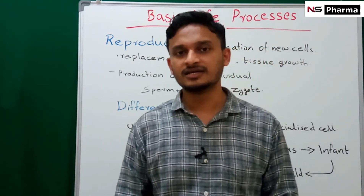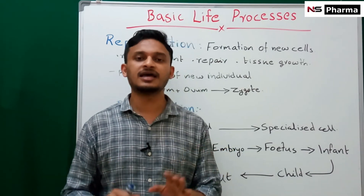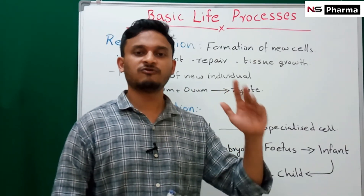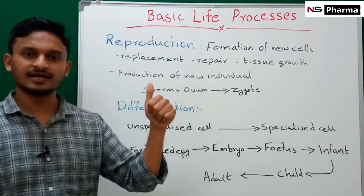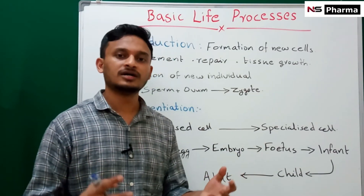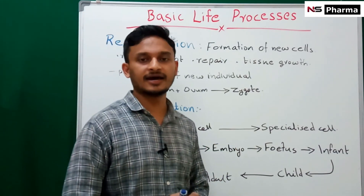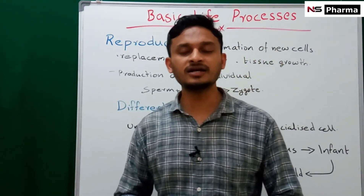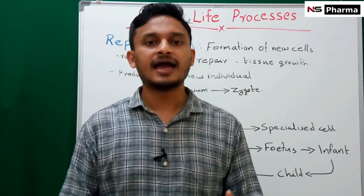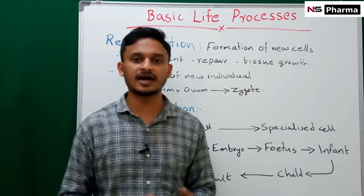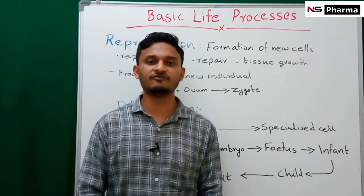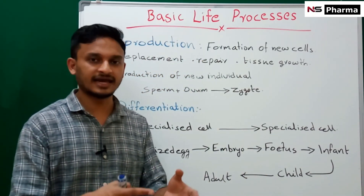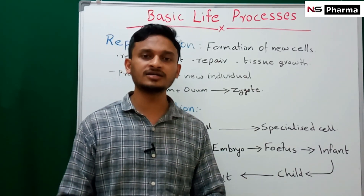These are the six basic life processes: metabolism, responsiveness, movement, growth, reproduction, and differentiation. In some books, authors also include respiration as a seventh basic life process. Respiration is the process of exchange of oxygen and carbon dioxide between the cell and its external environment.